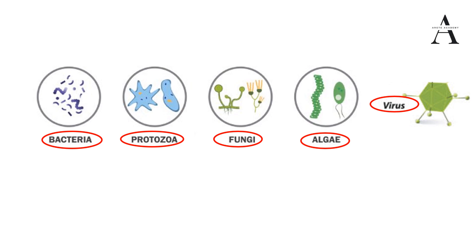Algae exist in environments ranging from oceans, rivers, lakes, ponds, and brackish waters — even in stone. They are usually green, but can be found in a variety of different colors, and they are even found living in snow. Algae are photosynthetic organisms and can be either unicellular or multicellular. They lack a well-defined body — structures like root systems and leaves are absent in them. Algae are found wherever there is adequate moisture.